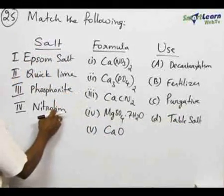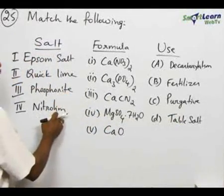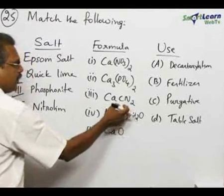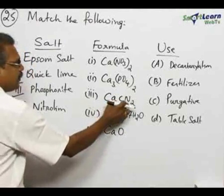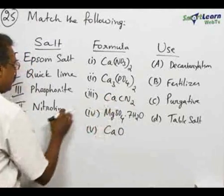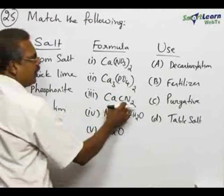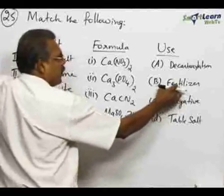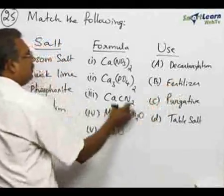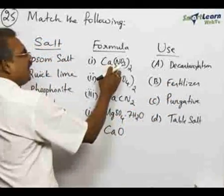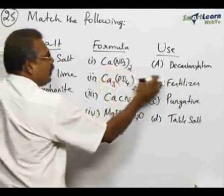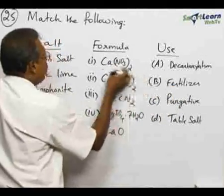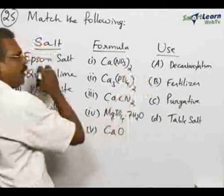Now, nitrolim — nitrolim is nothing but a true fertilizer. And at the same time, calcium nitrate Ca(NO₃)₂ is also used as a fertilizer. Only these two can be matched, but not any one of them individually.